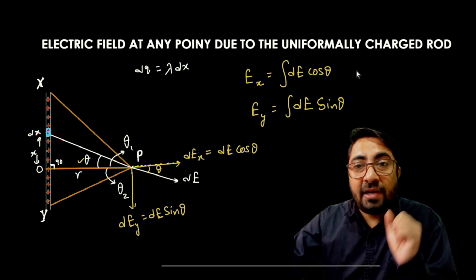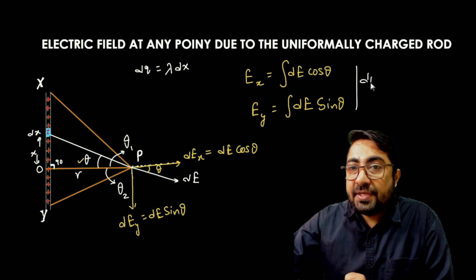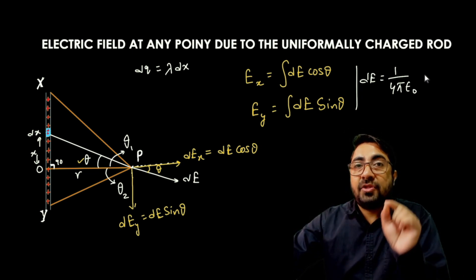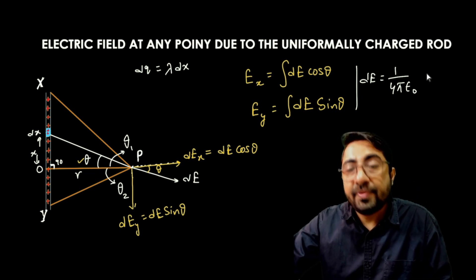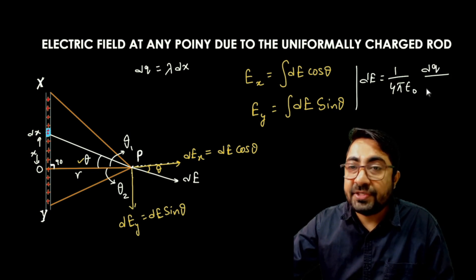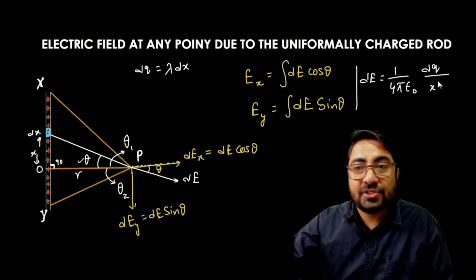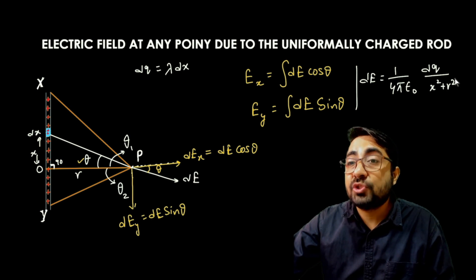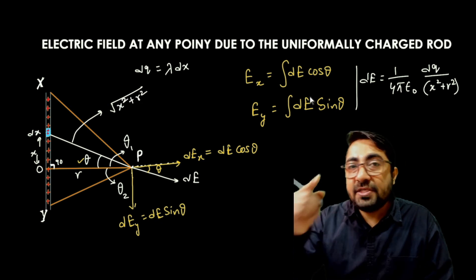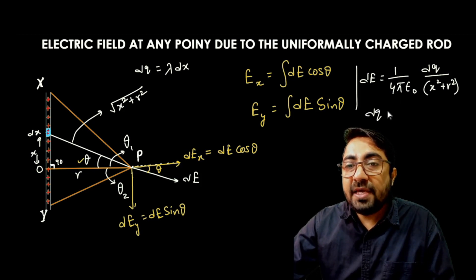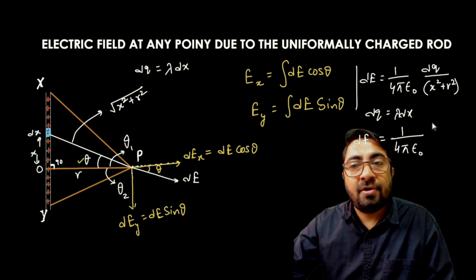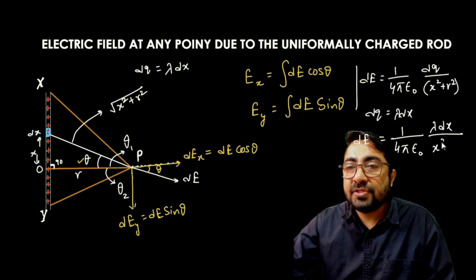First we calculate the value of dE. So dE equals 1 upon 4 pi epsilon naught times the small charge dq divided by the distance squared. The distance is the square root of x squared plus r squared, so squared it is x squared plus r squared. The value of dq equals lambda into dx. Therefore, dE equals (1/4πε₀) times (lambda dx) divided by (x² + r²).